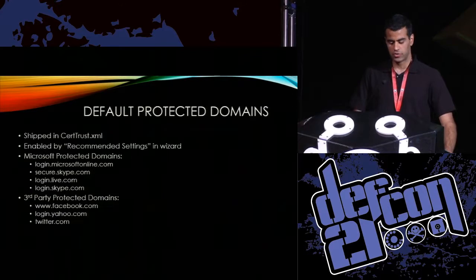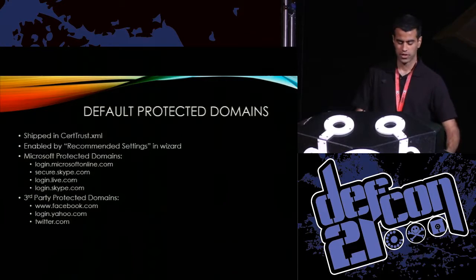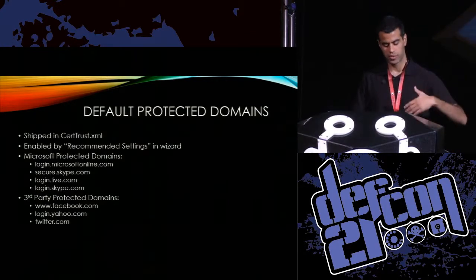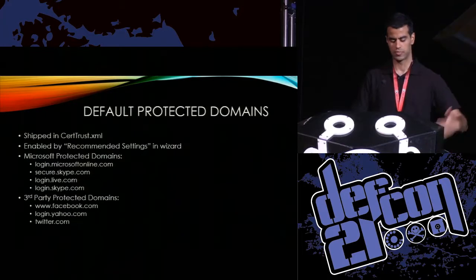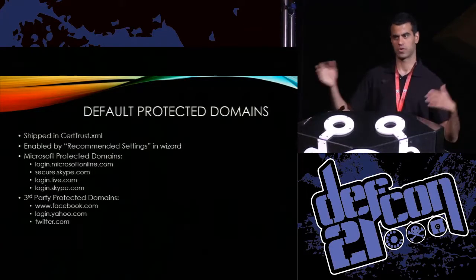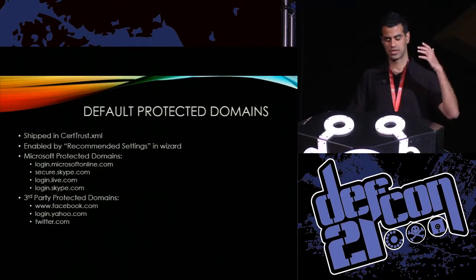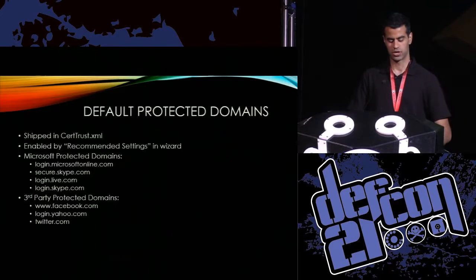Default protected domains that ship with EMET are in the certtrust.xml file, covering both third-party and Microsoft domains. These include Twitter, Facebook, and Yahoo — companies that wanted to cooperate and be included. This is all configurable via the wizard in EMET.